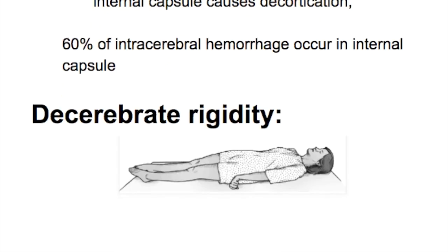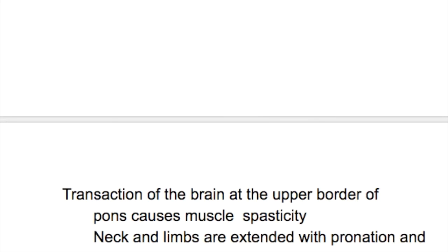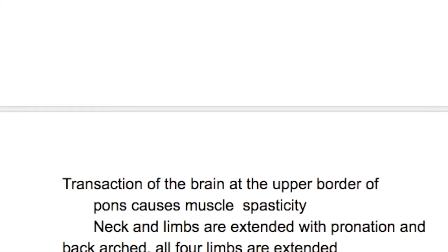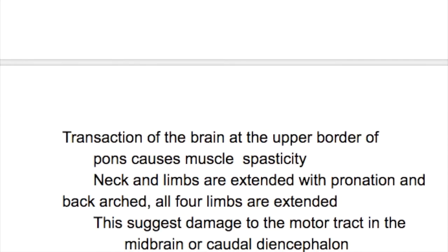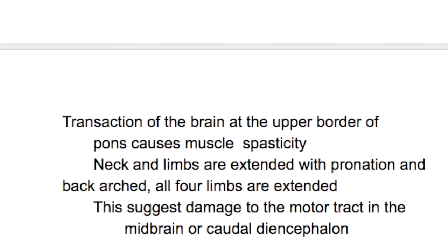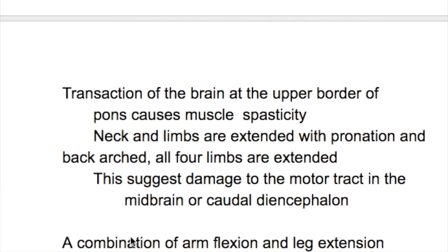In decerebrate rigidity, transaction at the upper border of the pons causes muscle spasticity. The neck and limbs are extended with pronation and the back is arched. All four limbs are extended. This suggests damage to the motor tract in the midbrain or caudal to the diencephalon.